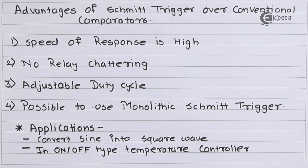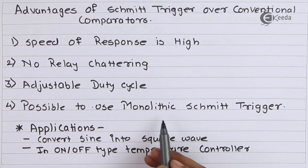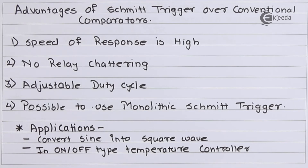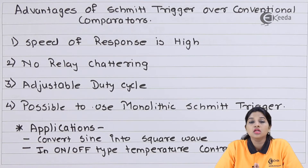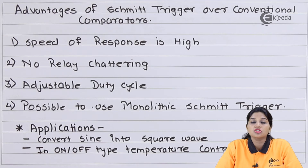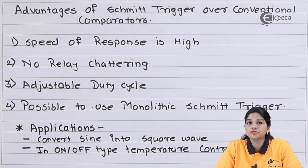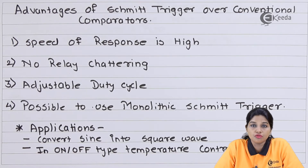The next advantage is the possibility of using a monolithic Schmidt trigger, which further increases the speed of operation. The only disadvantage of Schmidt trigger is that its sensitivity is less — small variations in the input are not identified by the circuit during the hysteresis width, which is the difference between the upper threshold level and lower threshold level. During this period, any variation in the input voltage is not detected by the circuit.